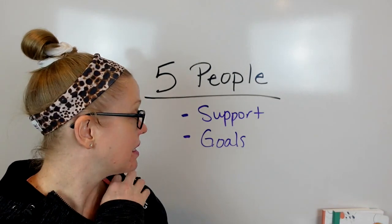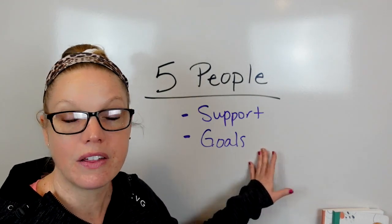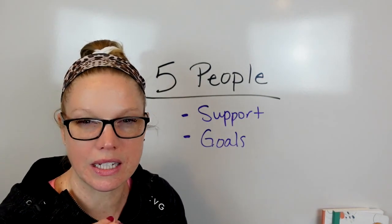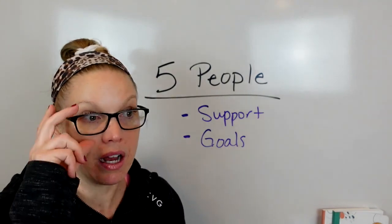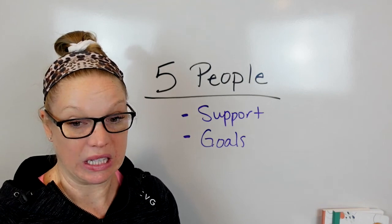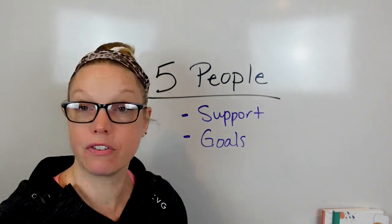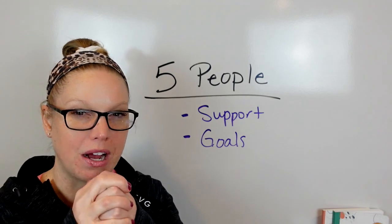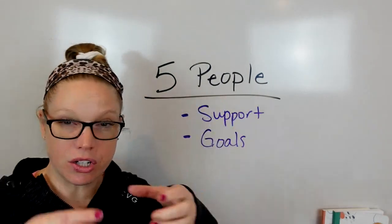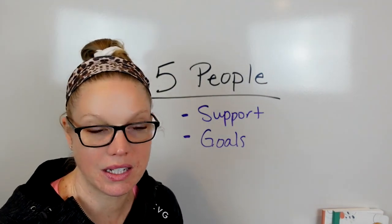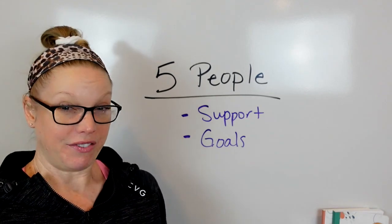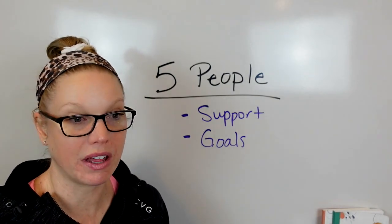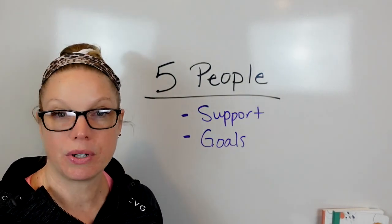But are the support and the goals that you have similar enough that they would be able to support you? I'm spending this much time talking about it because sometimes it's right in front of your face and you don't even see it. This person really is not a supportive person for me, this person has completely different goals than what I have, so it doesn't make sense to have them be one of my close five people. This is your circle, this is your support group that keeps you moving forward when things get tough or helps you get back on track if you feel like you've gotten off track. If these people are not on the same wavelength as you on health, it can be really tough to keep going.